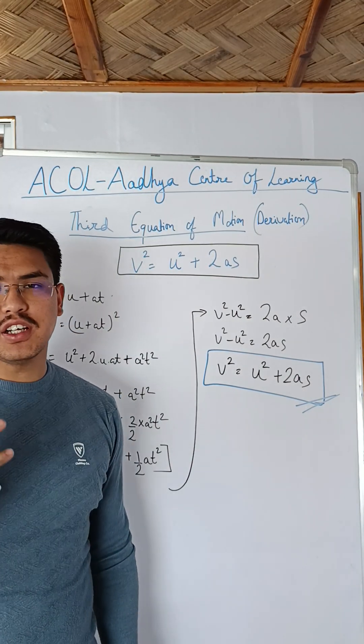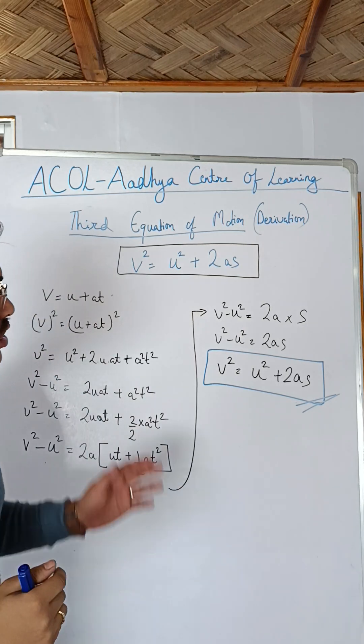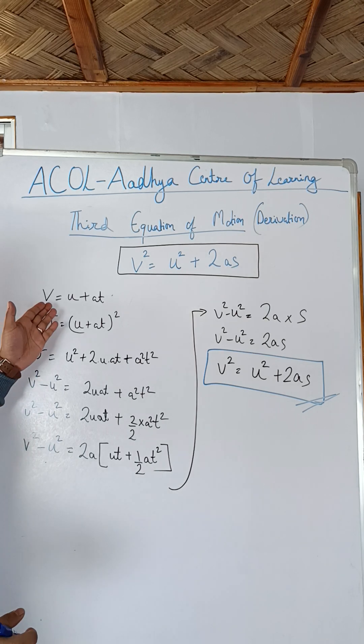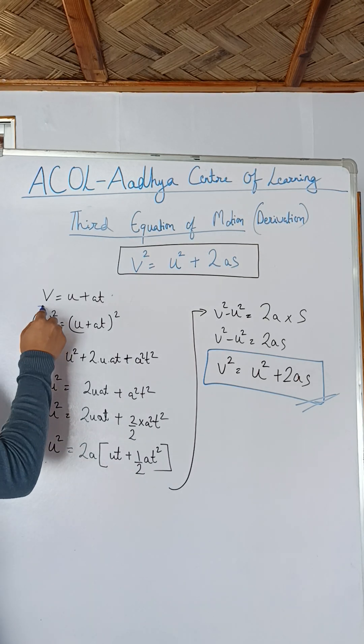Hello everyone, in this video we will derive the third equation of motion. The third equation of motion states that v square is equals to u square plus 2as. V is equals to u plus at, so this is your first equation of motion.